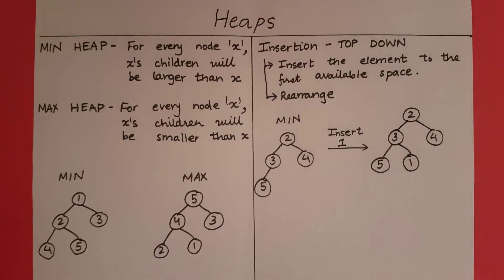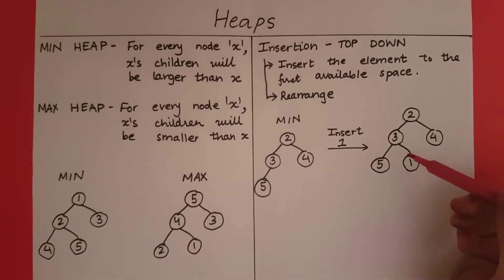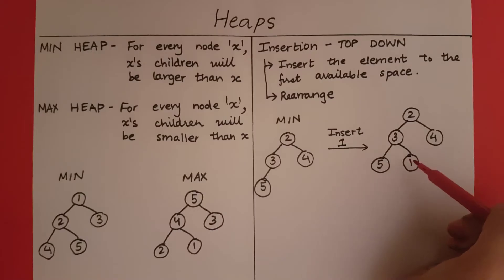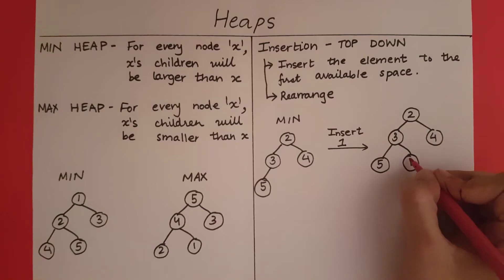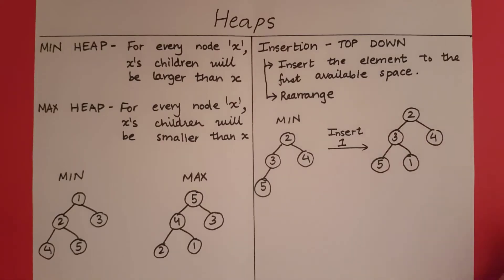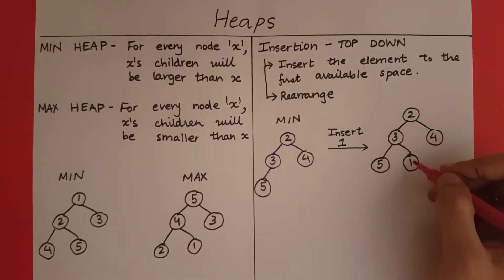Now we go to the second step. We need to check whether the heap property is satisfied. The heap property says that all the children of a node must be larger than that node. We check one with its parent. Is one greater than the parent? Looking at one and three — one is not greater than three; one is less than three. This means the heap property is not satisfied, so we need to swap one and three.